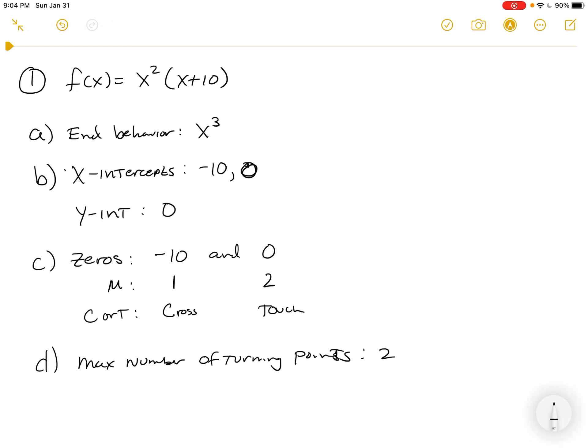It's always one degree less than what the end behavior is, because the end behavior represents the very first term that's going to be multiplied out and therefore has the degree. So the degree of the polynomial is a third degree polynomial. Maximum number of turning points is one less than the degree. And then E's what's new.